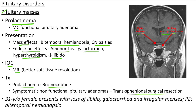Now let us see a clinical case of prolactinoma. A 31-year-old female presents with loss of libido, galactorrhea and irregular menses. Physical examination shows bitemporal hemianopsia. This is the mass effect, and these are the endocrine effects of prolactinoma.